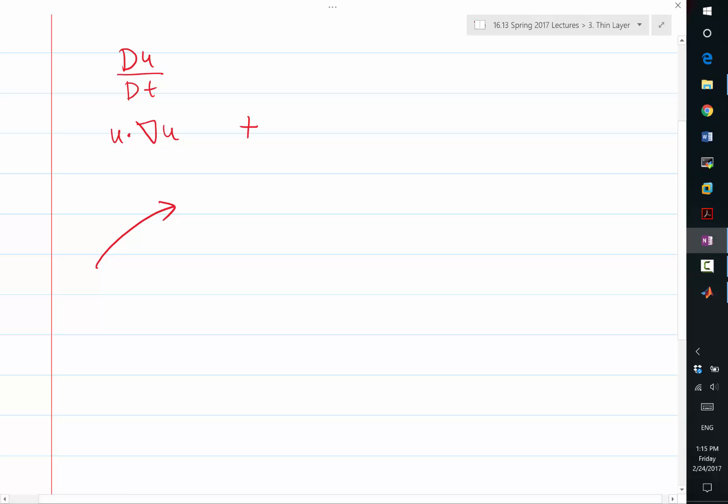So there is another term that is 1 over rho times grad p. So that's the pressure term. That's the reason why flow accelerates and decelerates and why the streamline curves.